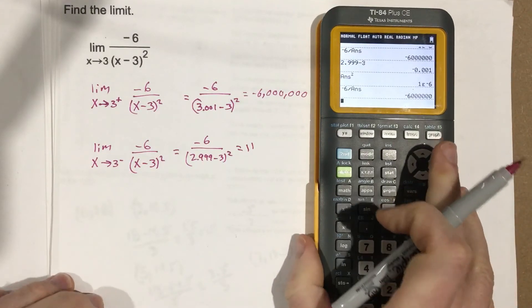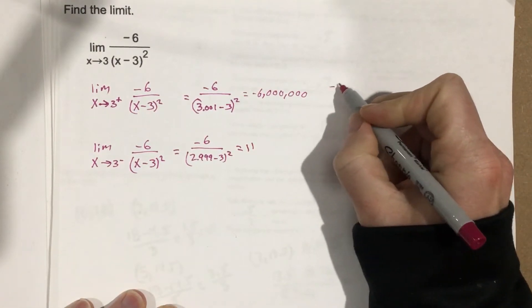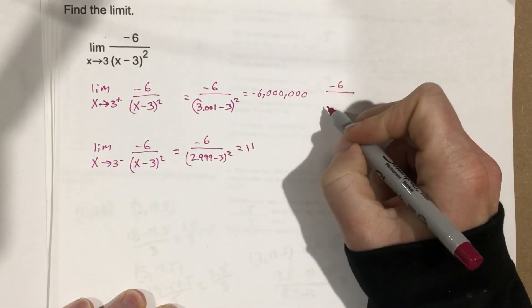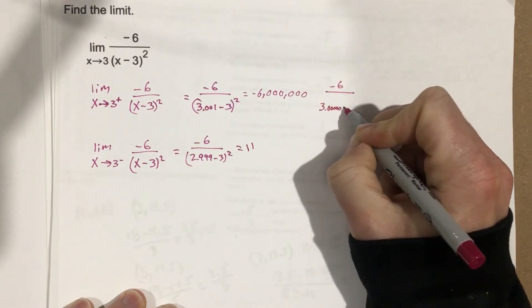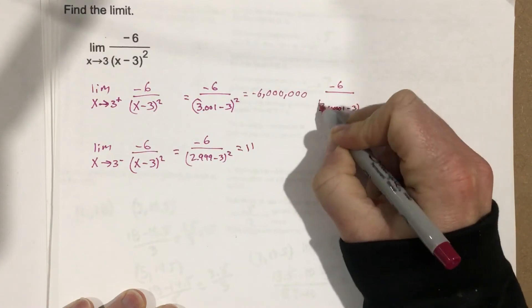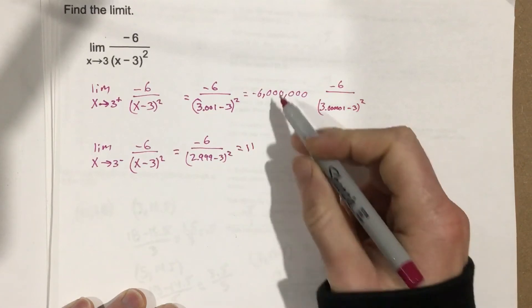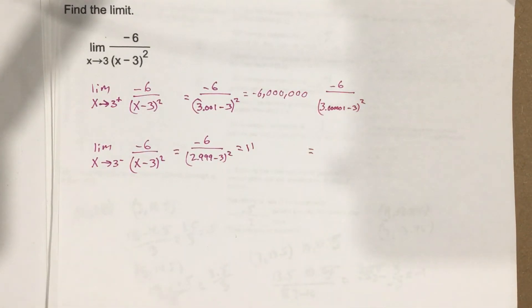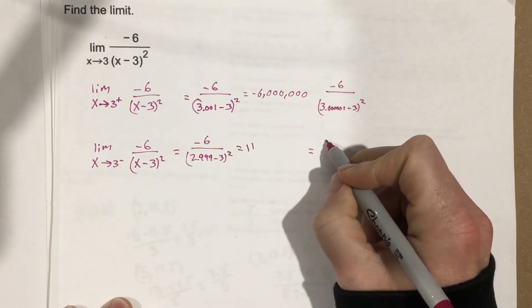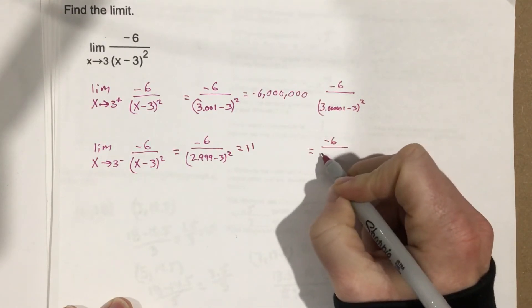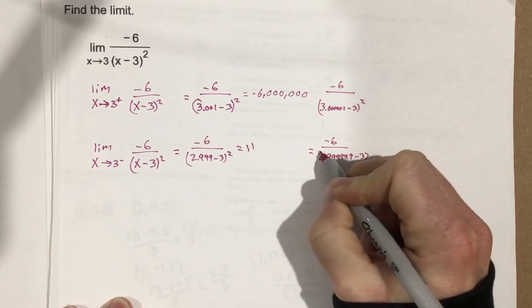It seems like it's going towards negative infinity, but let's check. Let's do negative 6 over (3.000001 minus 3) squared, and we know this will be the same for the other side. But let's also plug in negative 6 over (2.9999999 minus 3) squared.